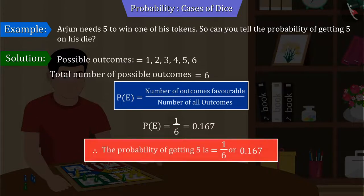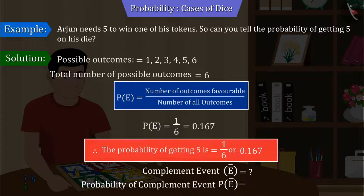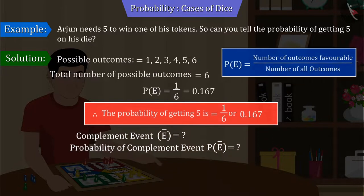Can you now tell me what would be the complement event for this? And what will be the probability of this complement event? Here, the complement event means not getting 5 when the dice is thrown.